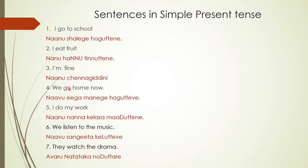'We go home now' — Naavu. Eega means 'now.' Eega manege hoagutteve. Here it was singular: Naanu hoaguttene. Naavu hoagutteve — it is very easy to follow. 'We go home now' is Naavu eega manege hoagutteve.